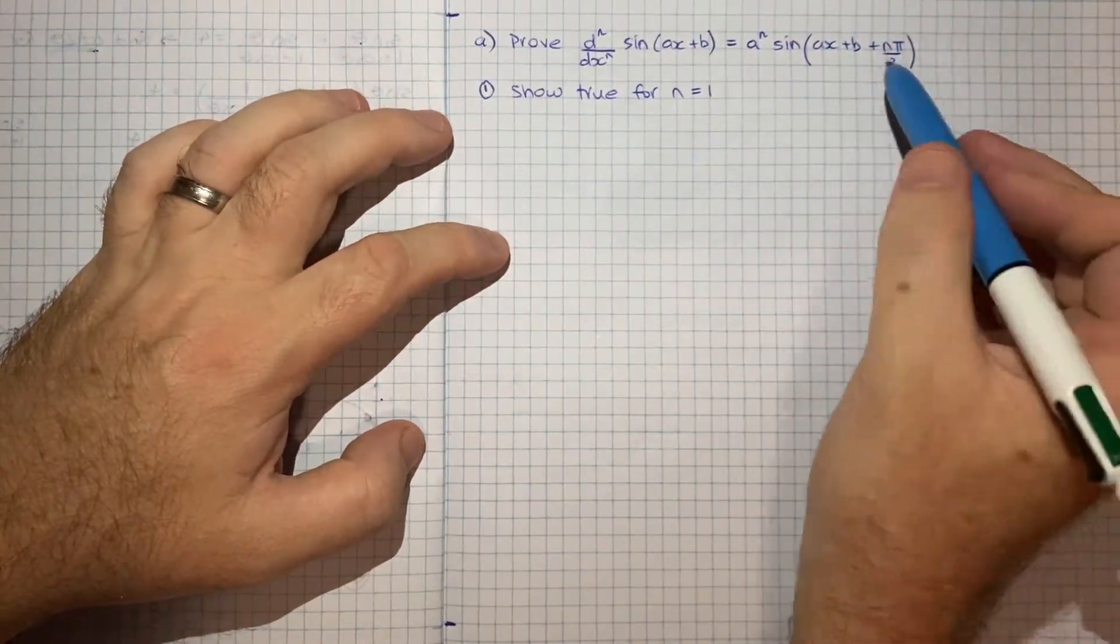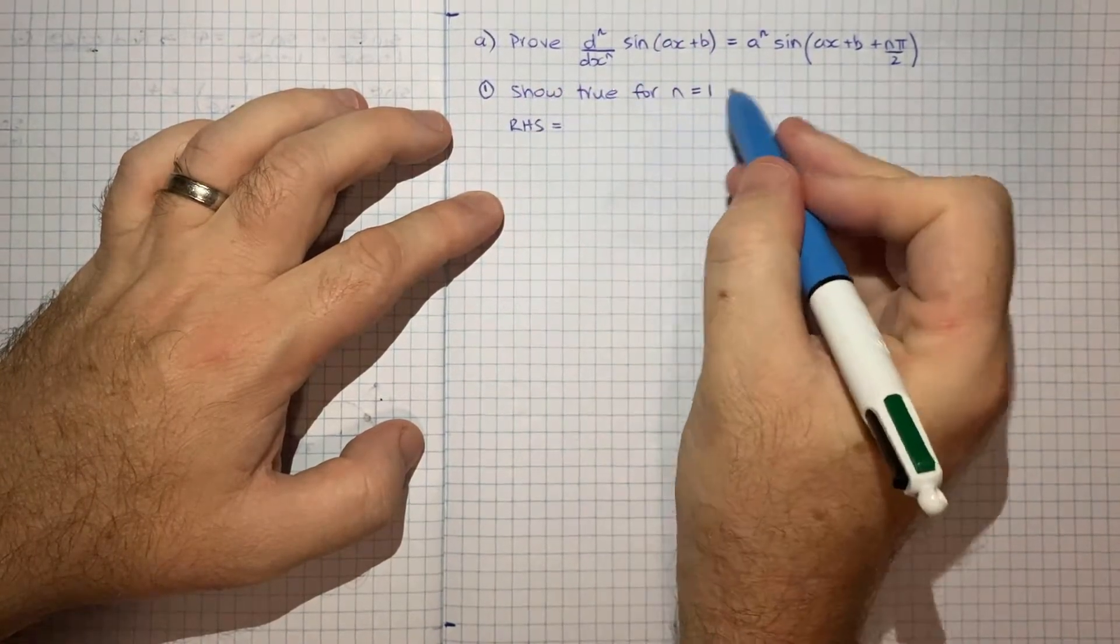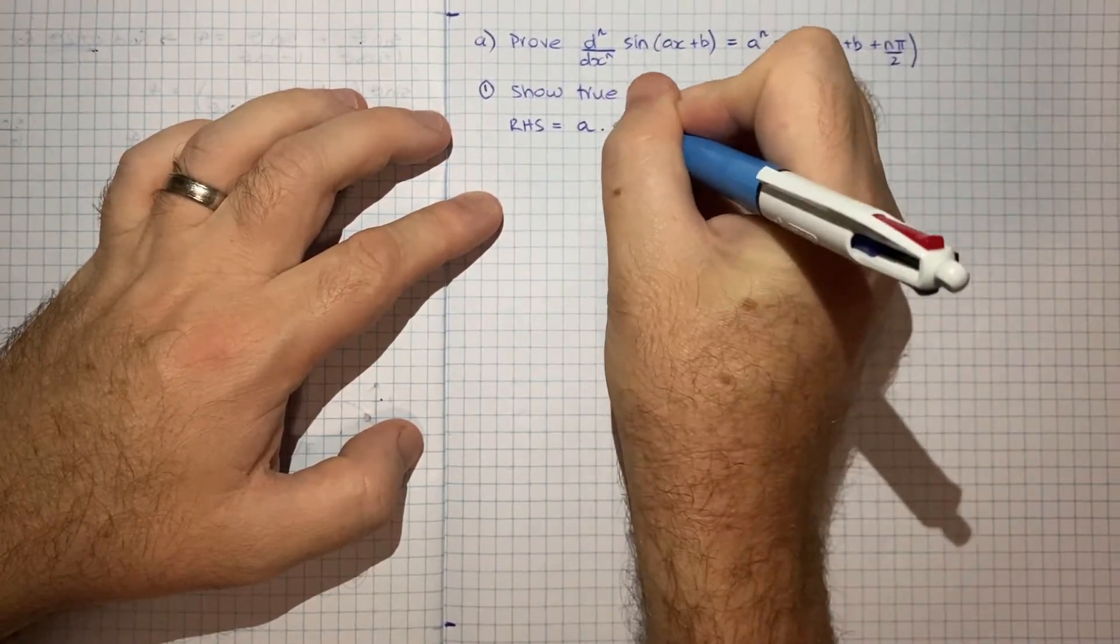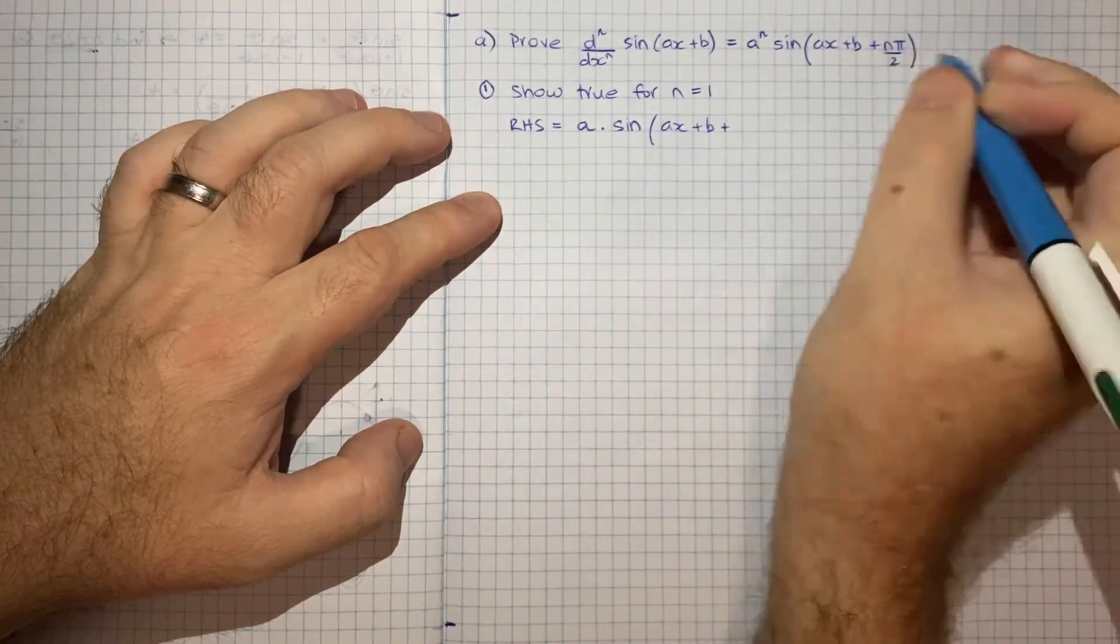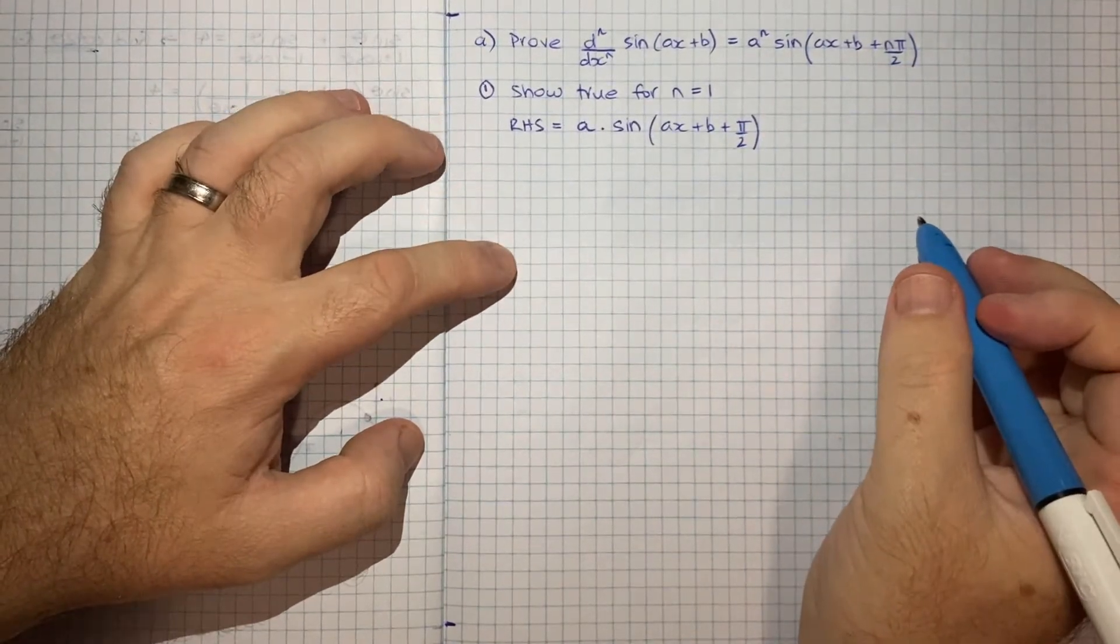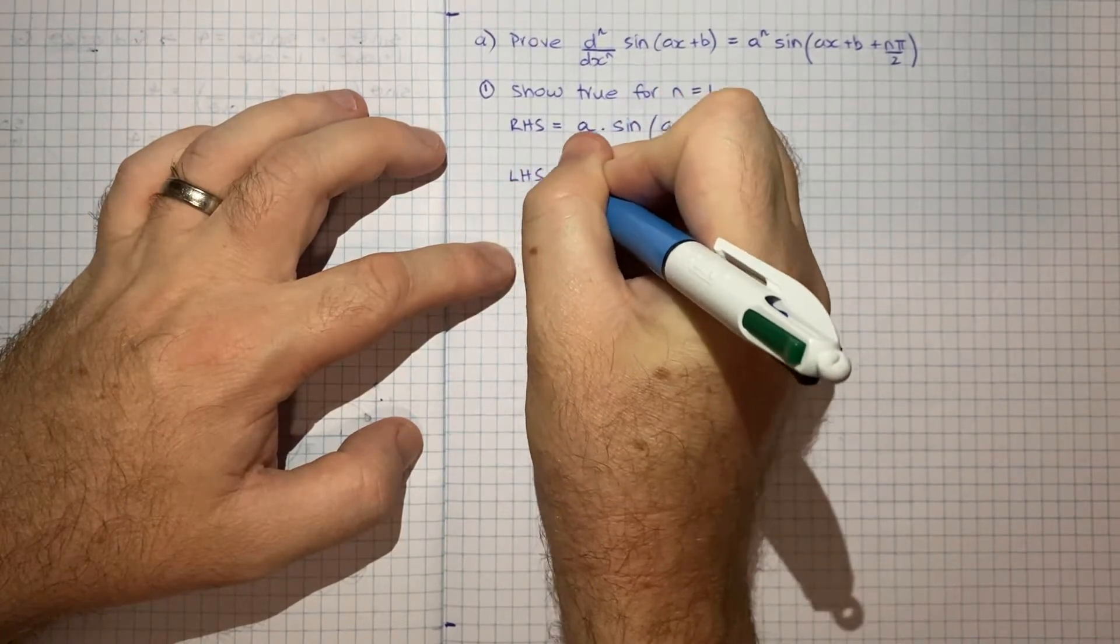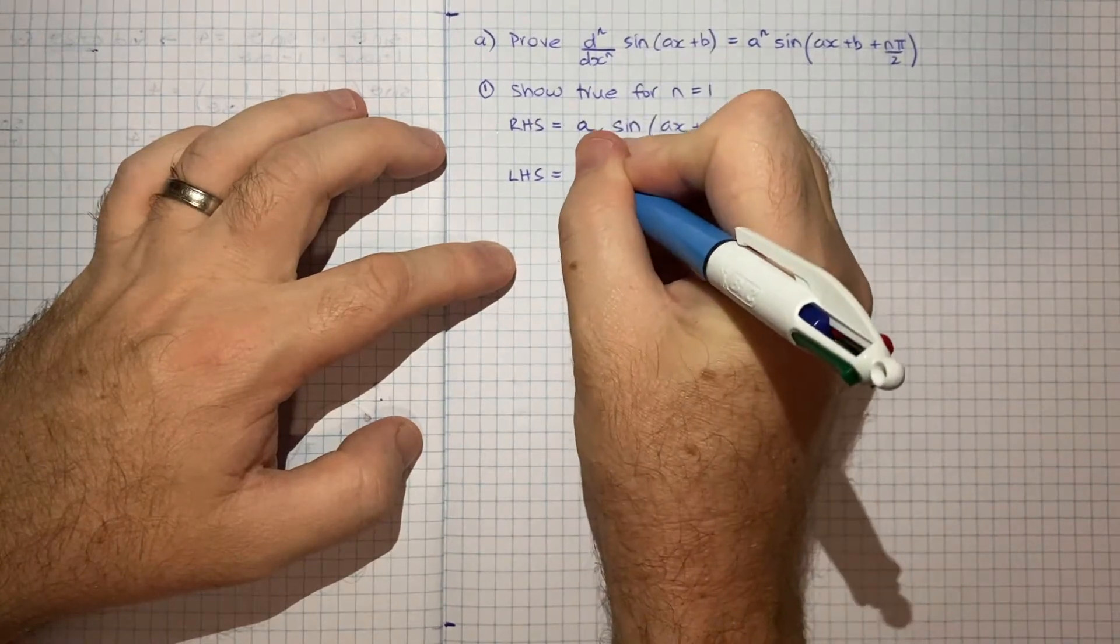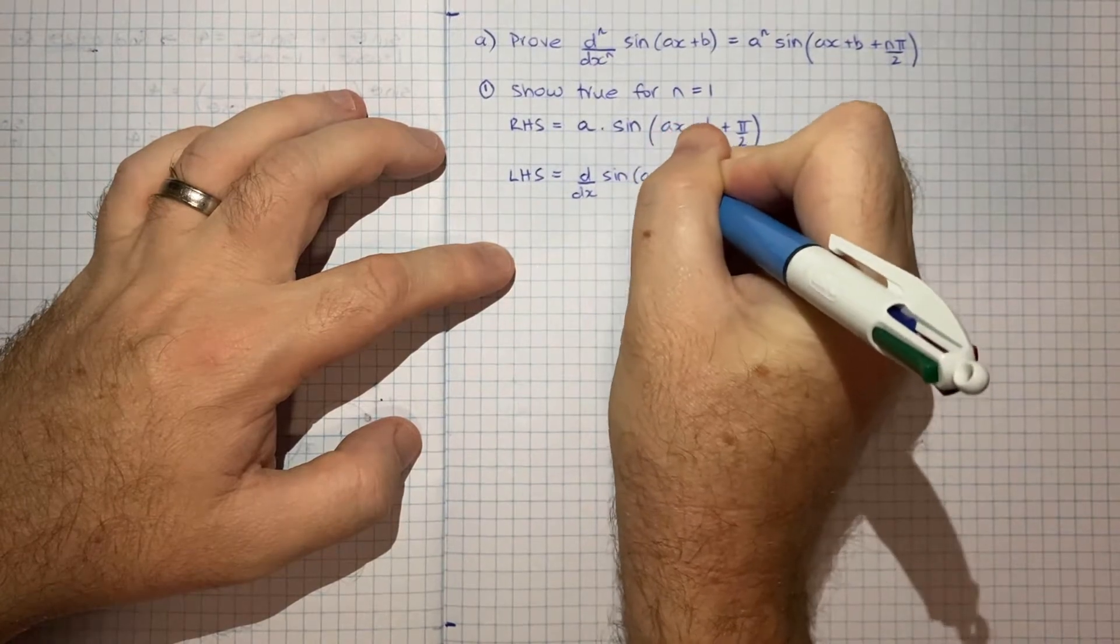So to do that, maybe first I'll note what the right hand side is. So our right hand side, when n is equal to 1, would be a times sin(ax+b+π/2). So that's our right hand side. Now let's take a look at our left hand side and see if we can get to the same place. So effectively, the left hand side will just be the first derivative. So d/dx of sin(ax+b).